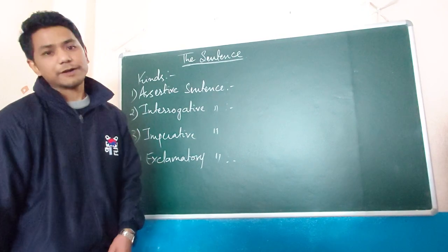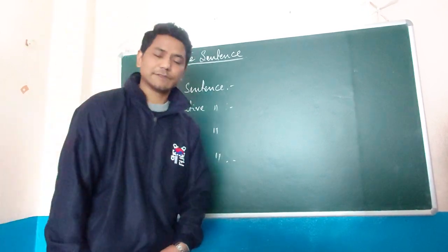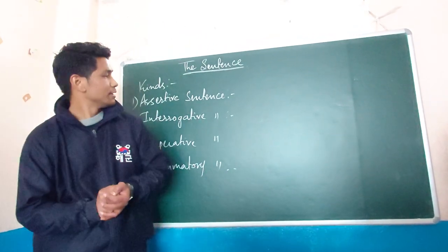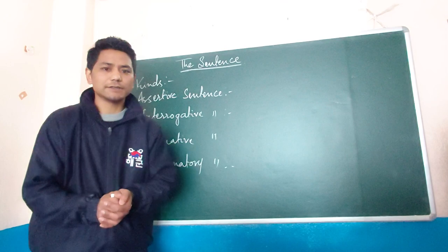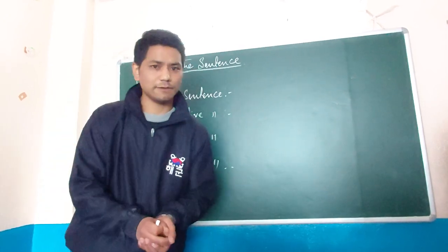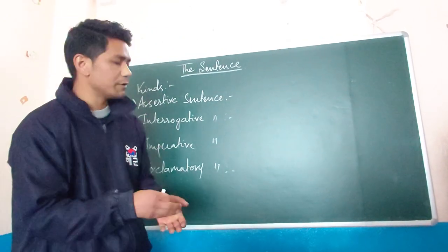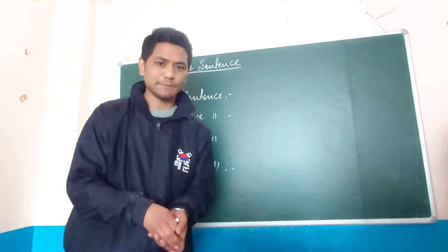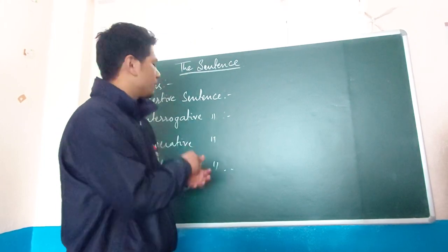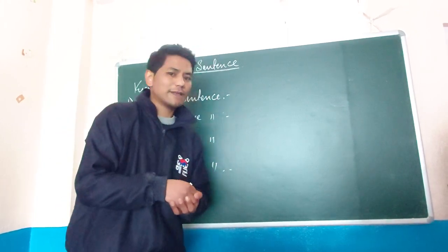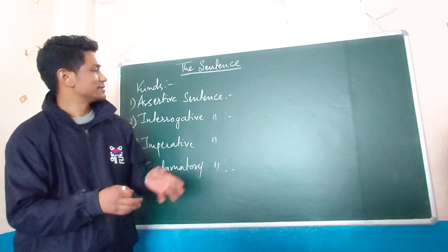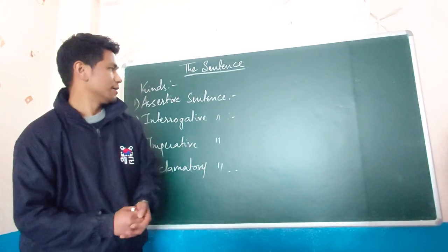Now let us discuss the first one — assertive sentence. Assertive sentences are those sentences which assert something, declare something, or state something. That's why they are also called declarative sentences, and also statements, because they state and declare something.